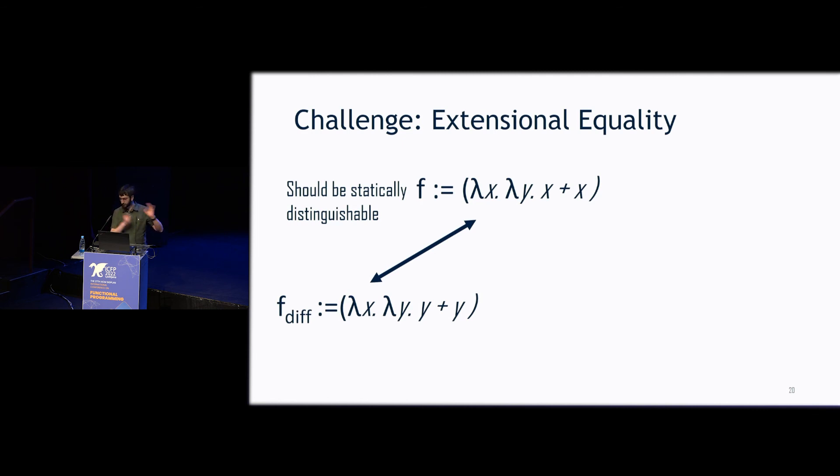But the flip side is we have another function that does the exact same thing as our F, but it does it by doing two times instead of X plus X. Now, these are observationally equivalent. We shouldn't be able to distinguish these at runtime. There should be no way to crack the function open and break the static equivalences that we had in our non-gradual language.